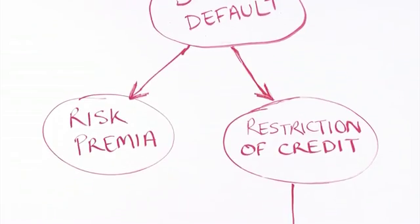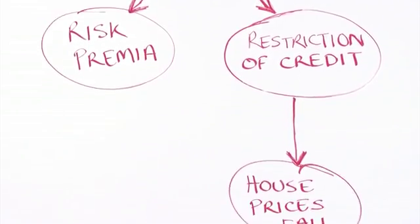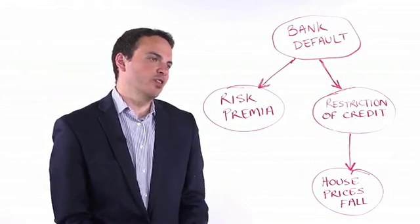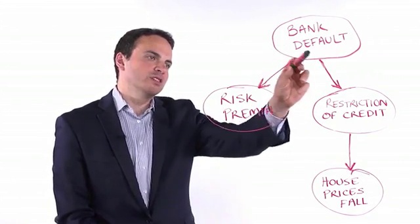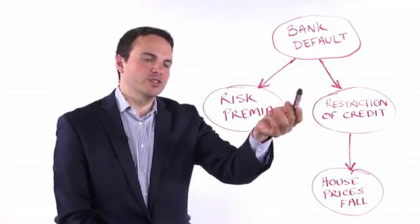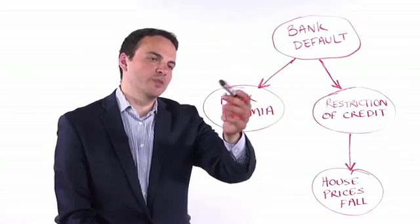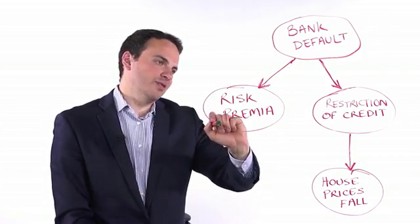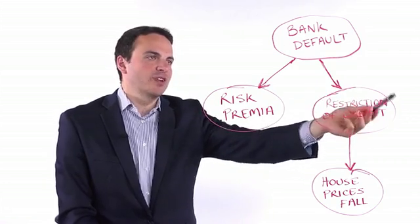What you can see here is a very simple scenario where we have a bank defaulting, whatever bank in an economy, with two consequences. These are modeled through these two arrows and two consequences could be adjustments of the risk premium denoted by this circle, which are stochastic variables, and restriction of credit to the economy.